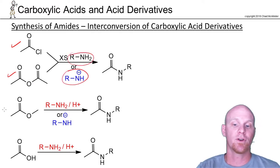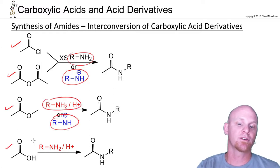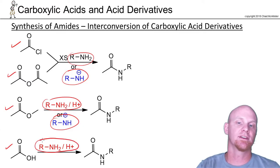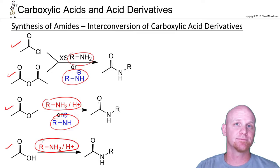We can turn an ester into an amide — again, with acid catalysis or with a strong nucleophile. We can also do it with a carboxylic acid, but only with acid catalysis. So all the other functional groups can be turned into an amide.